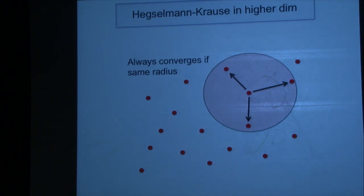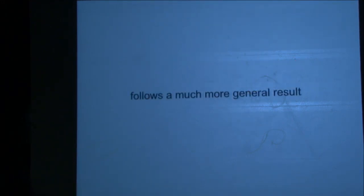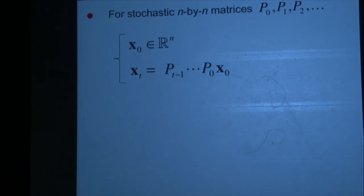In higher dimensions, this always converges when the radius is the same for everyone. There are at least four or five different proofs of that. But this follows from a much more general result I'd like to talk about. In the one-dimensional case, starting from any nice enough initial distribution, you always go to the same result.